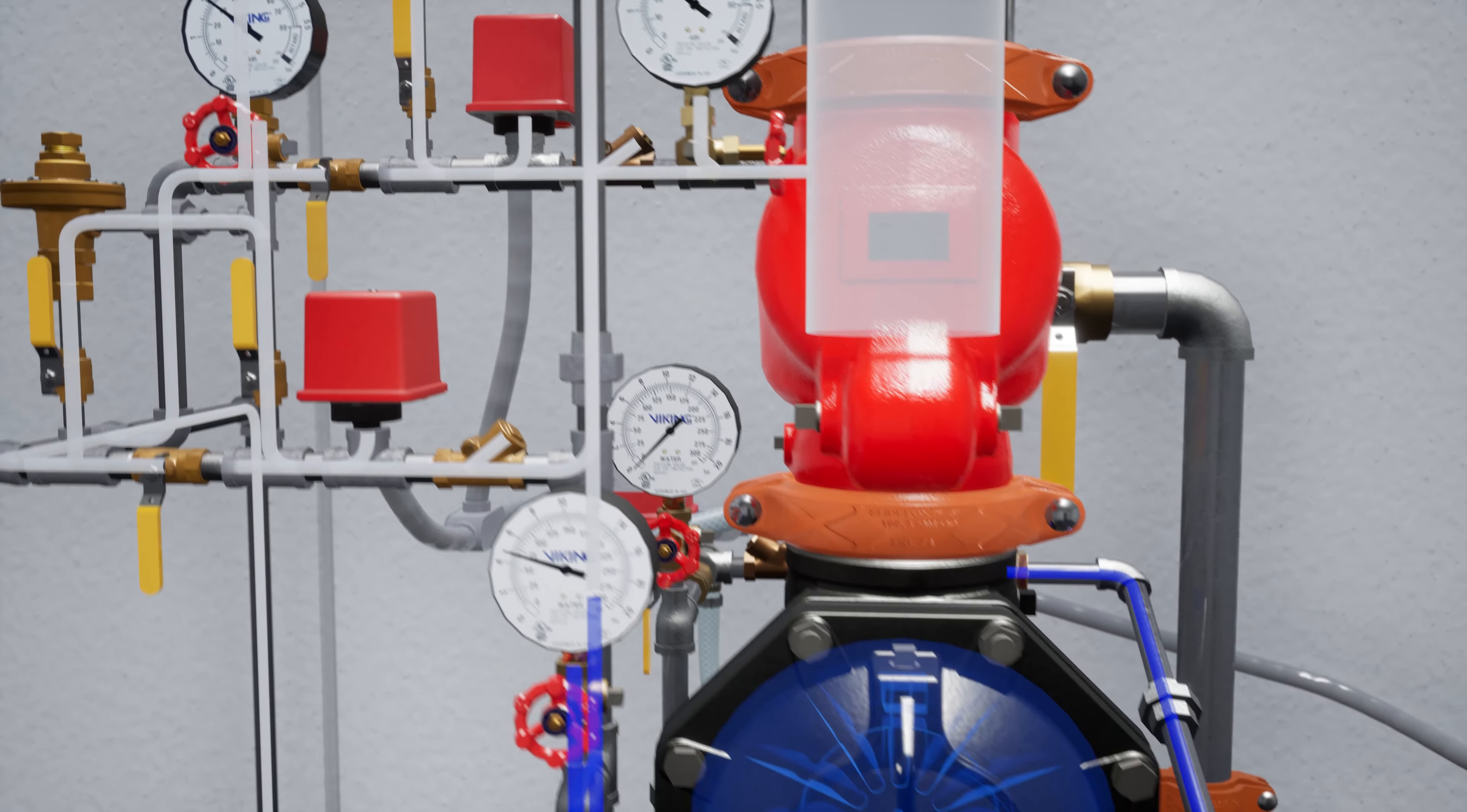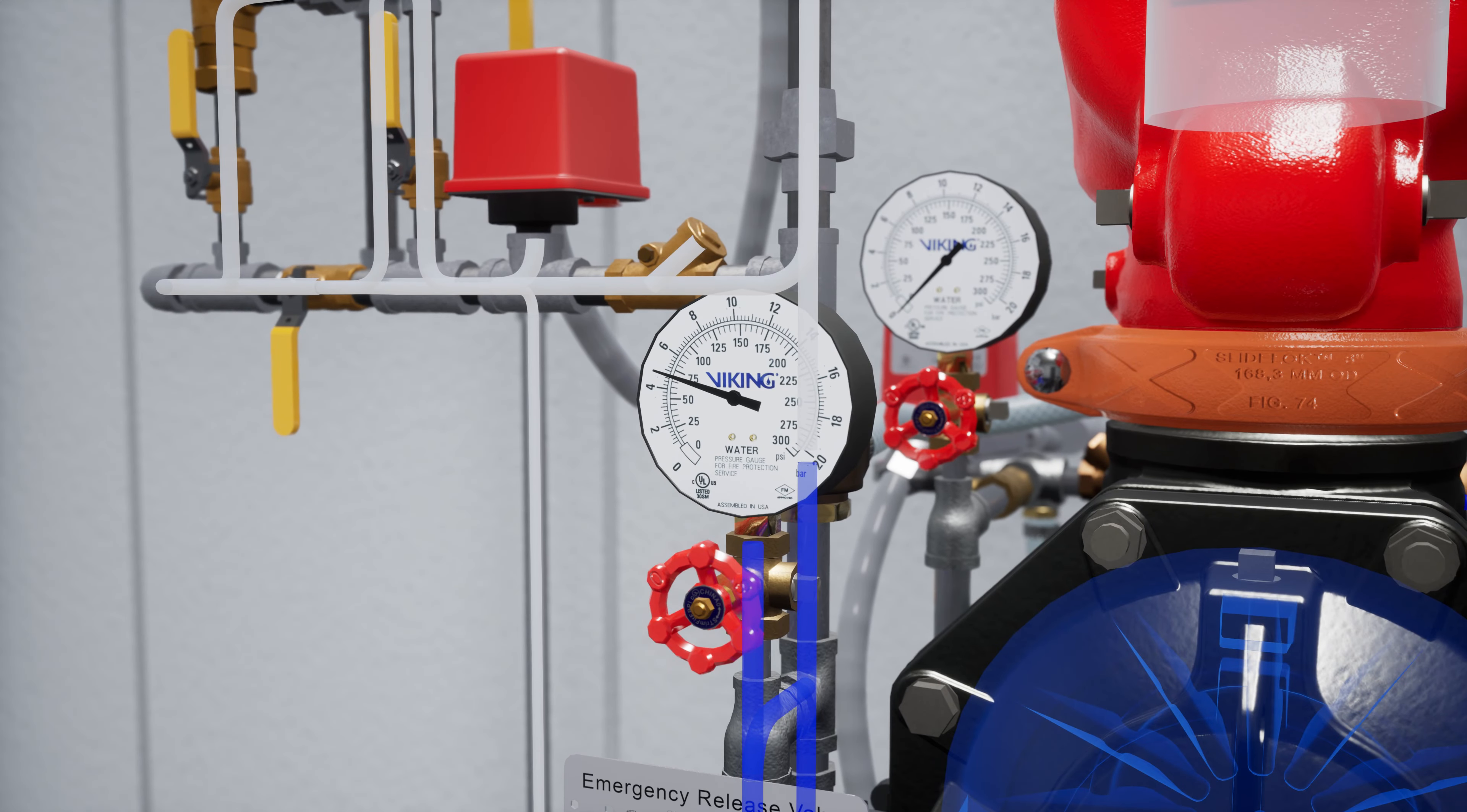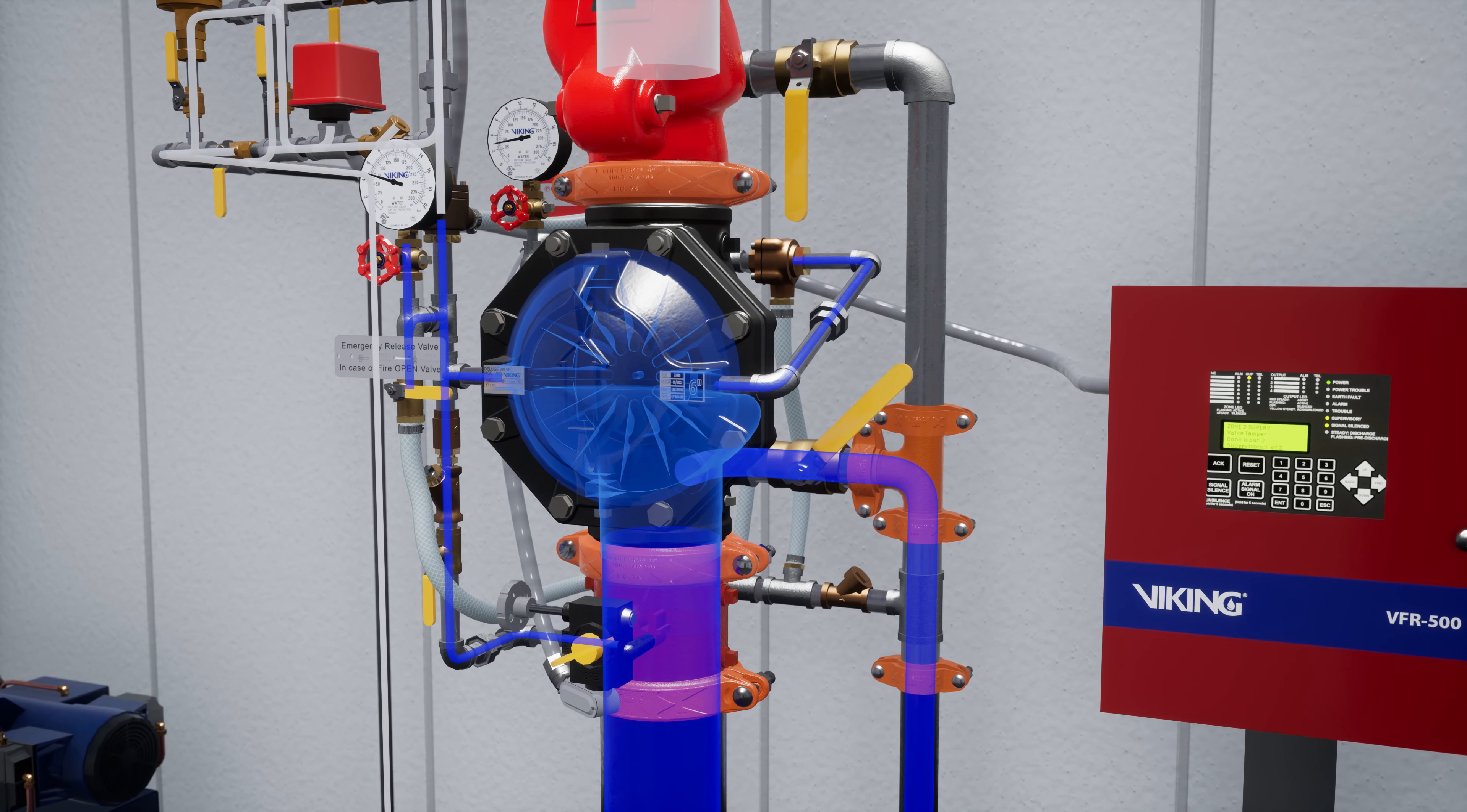Next, partially open the flow test valve. Verify water pressure has been established in the prime chamber. Slightly open the water supply control valve and begin introducing water into the system. Once flow has been established, close the flow test valve.